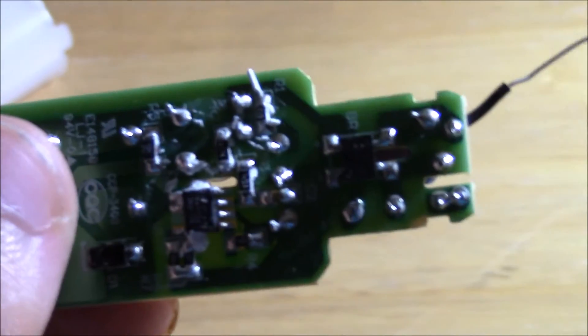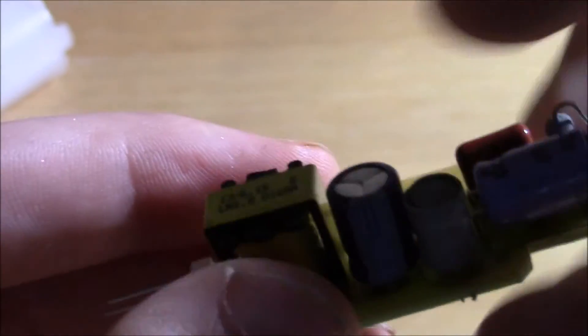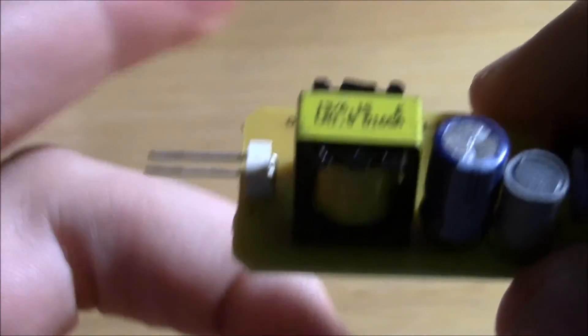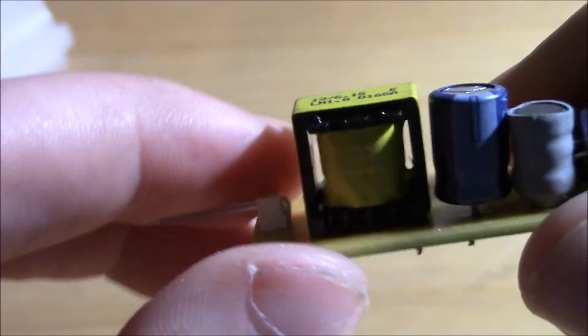We've got a rectifier in the back for AC to DC conversion. We have the smoothing capacitors for smoothing. And we got a main transformer right here, which is presumably dropping down the voltage to whatever voltage is required for the LEDs.